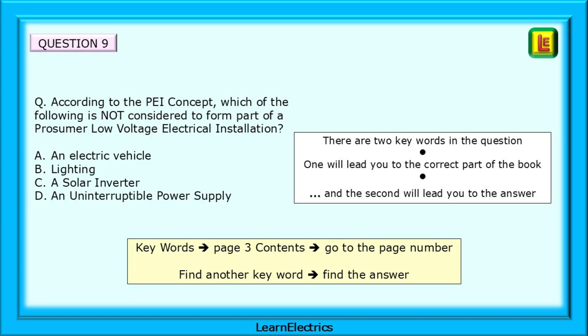For question number 9, according to the PEI concept, which of the following is not considered to form part of a prosumer low-voltage electrical installation? There are two key words in the question. One will lead you to the correct part of the book, and the second will lead you to the answer.